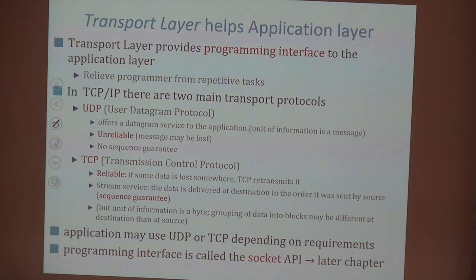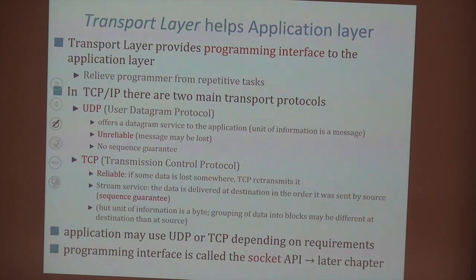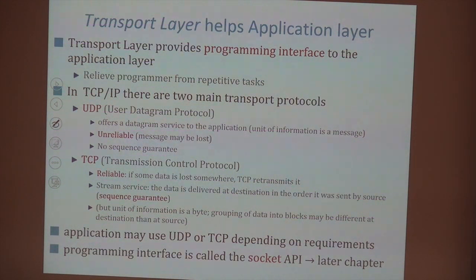If you use TCP, you call send, and if there are losses, TCP will do everything possible to repair them. Of course it will only do what's possible — if you connect to a web server and the web server crashes, you can retransmit all you want, it's dead. Similarly, if the communication line to your next Ethernet switch is broken, repeating packets won't repair it. So TCP will not necessarily make things reliable if it's impossible. But it relieves the programmer from doing all the things needed to repair losses.